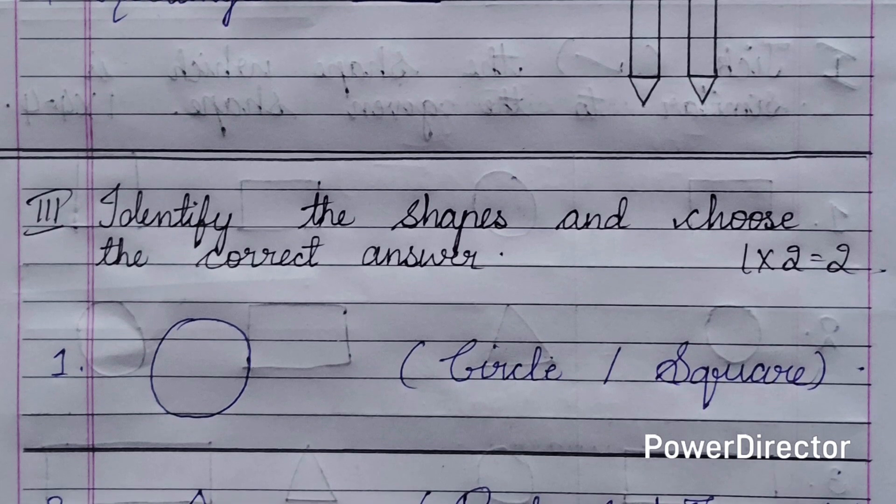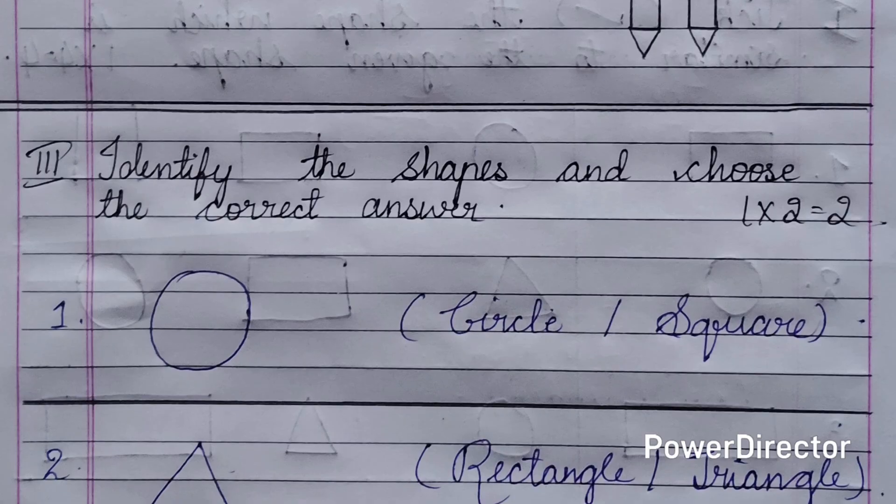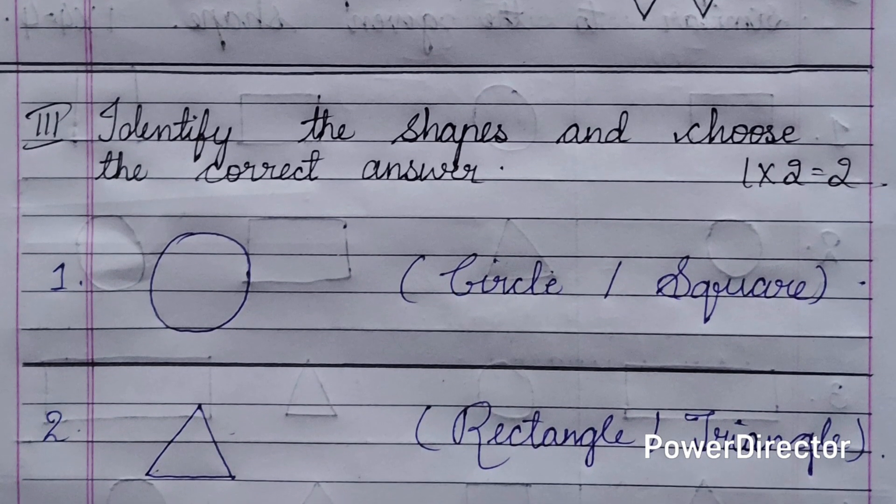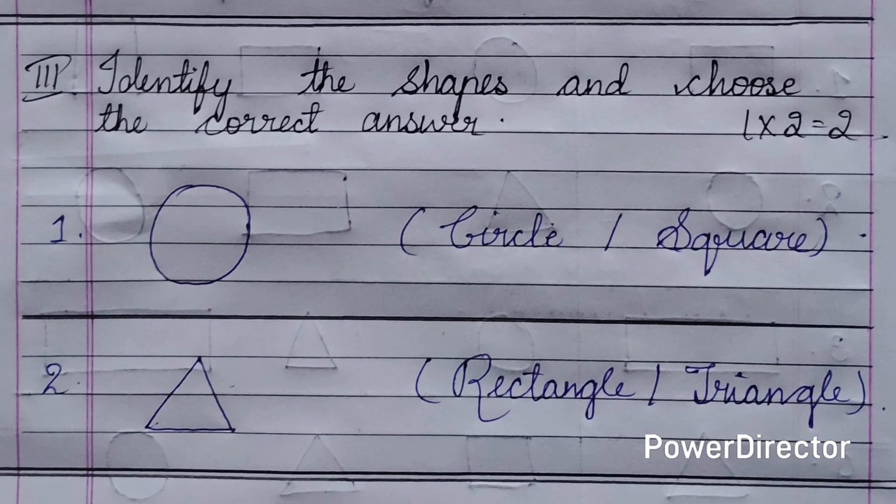Number two shows a triangle shape with options: rectangle or triangle. You need to identify the correct shape, which is triangle. This is all about the unit test paper for Lesson Number Two: Solids Around Us.